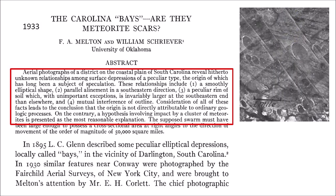The first systematic study of the Carolina Bays was published by Professors Melton and Shriver from the University of Oklahoma in 1933, titled 'The Carolina Bays: Are They Meteorite Scars?' The abstract describes aerial photographs revealing surface depressions with a smoothly elliptical shape, parallel alignment in the southeastern direction, a peculiar rim invariably larger at the southeastern end, and mutual interference of outline. Consideration of these facts leads to the conclusion that the origin is not attributable to ordinary geologic processes; rather, impact by a cluster of meteorites is presented as the most reasonable explanation.